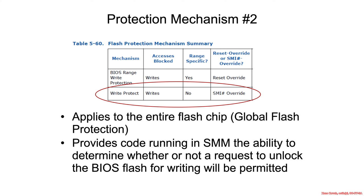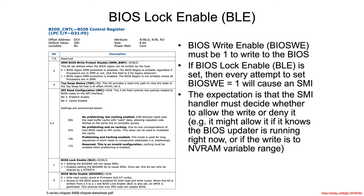The second major protection mechanism is a write protect mechanism that covers the entire range of the flash, and it is overridden by a system management interrupt as opposed to a reset of the computer. This allows protection of the entire flash chip, with system management code having the option to decide to allow certain writes to proceed.